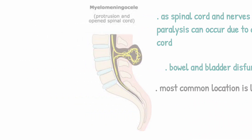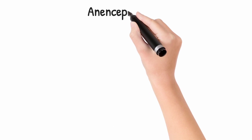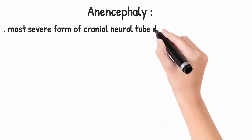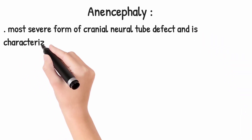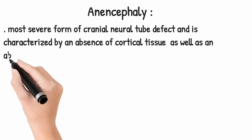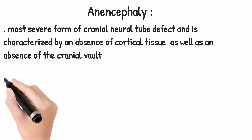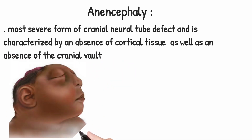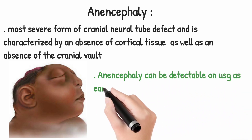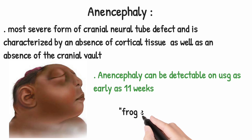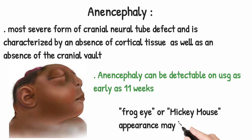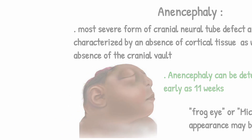The most common location for meningomyelocel is the lumbosacral spine. Anencephaly is the most severe form of neural tube defect and is characterized by the absence of cortical tissue and the cranial vault. You can see the absence of the vault and cortex in this image. It can be detectable on ultrasound as early as 11 weeks, and a frog eye or Mickey Mouse appearance is characteristic of anencephaly.